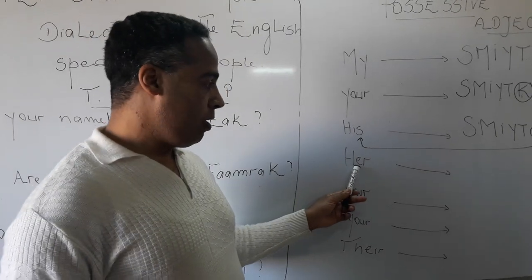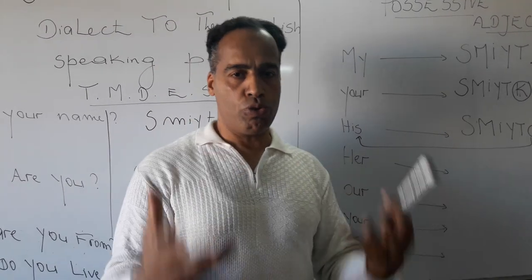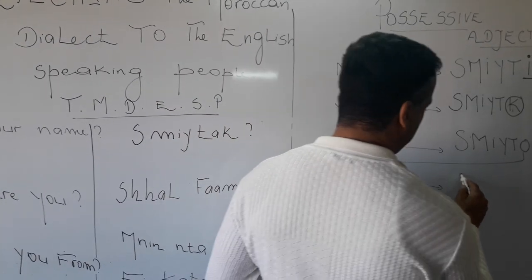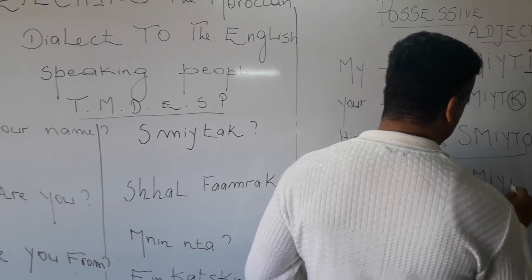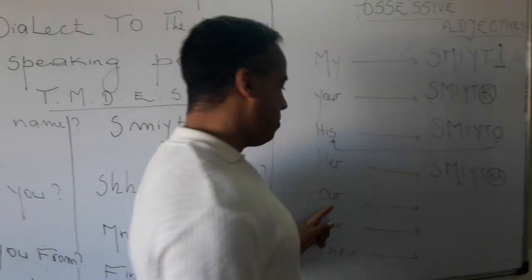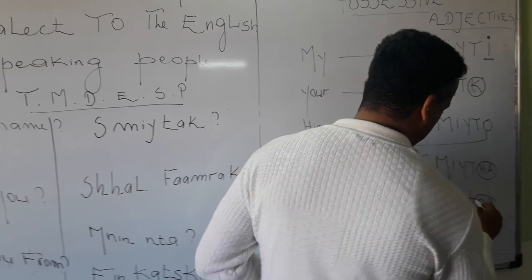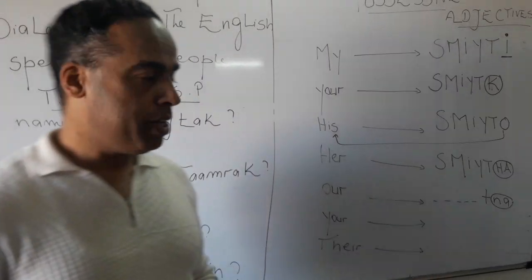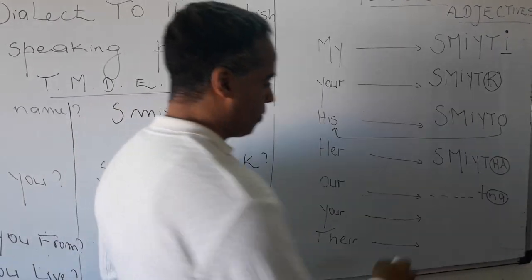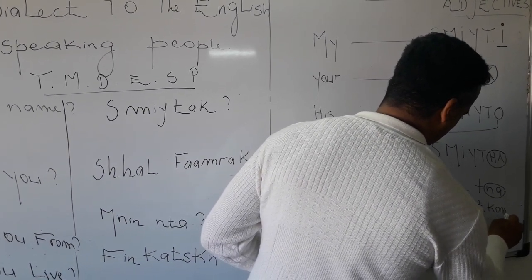'Her' is 'smitha.' We use this example to show how possessive adjectives work. So 'smitha' means 'her name.' When we add 'na' to the end, it means 'our.' And 'your' in the plural form ends with 'koum' at the end of the word.